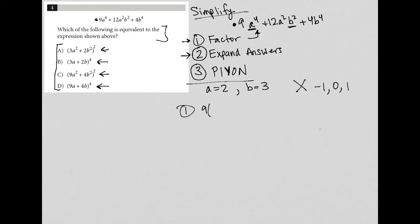So I'm going to take this 9, A to the 4th, instead of A, I'm going to make it a 2 to the 4th, plus 12. Instead of A squared, I'm going to make it 2 squared. Instead of B squared, I'm going to make it 3 squared, plus 4. And instead of B to the 4th, I'm going to make it 3 to the 4th.